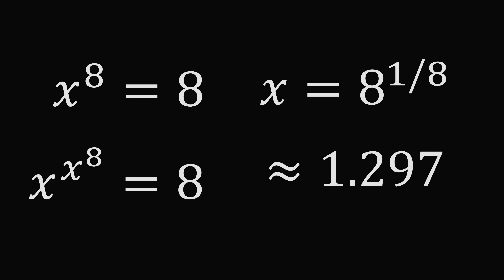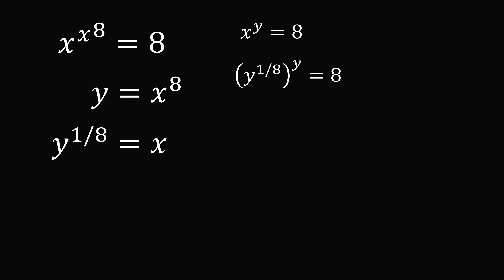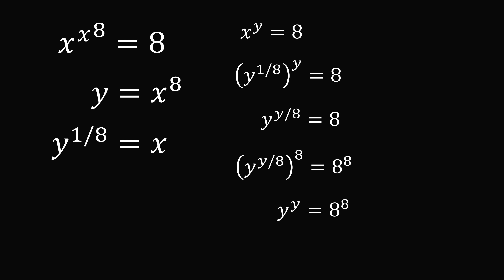If you didn't see that trick directly, here's another way to solve the problem. Let y equal x to the power of 8, and substitute y for the exponent, giving x to the y equals 8. Since y equals x to the power of 8, taking both sides to the power of 1 over 8 gives x equals y to the power of 1 over 8. Substituting in, we get y to the power of 1 over 8, raised to the power of y, equals 8. Multiplying the exponents gives y to the power of y over 8 equals 8. Taking both sides to the power of 8 gives y to the power of y equals 8 to the power of 8, so y equals 8 is a solution. Substituting back, x equals 8 to the power of 1 over 8. That's the answer.